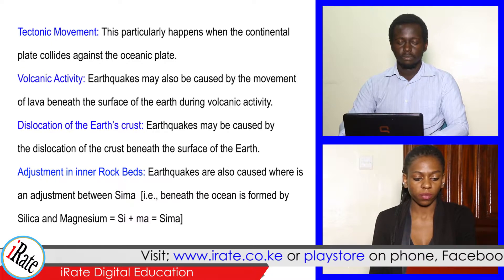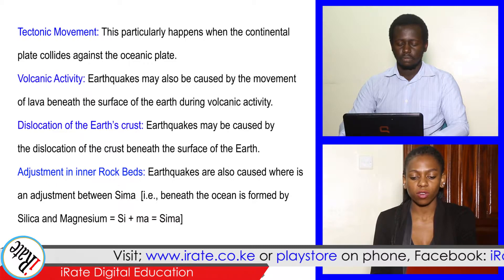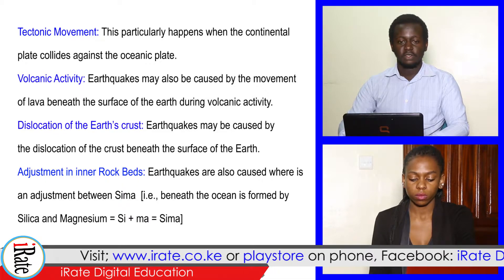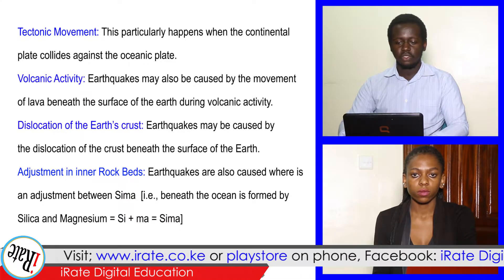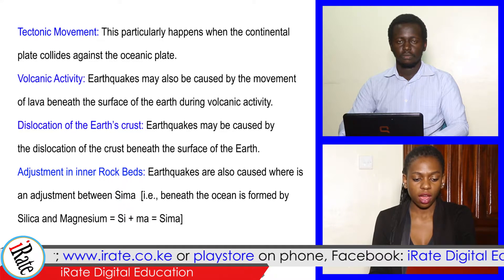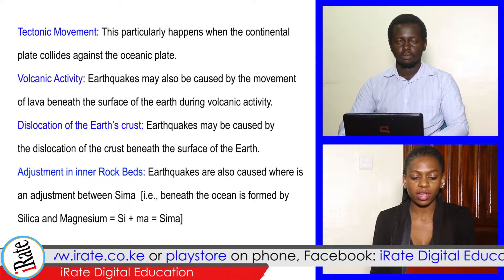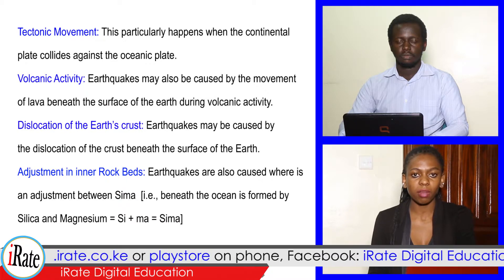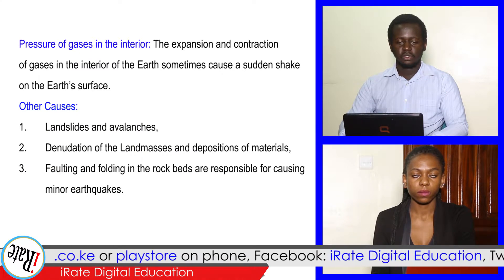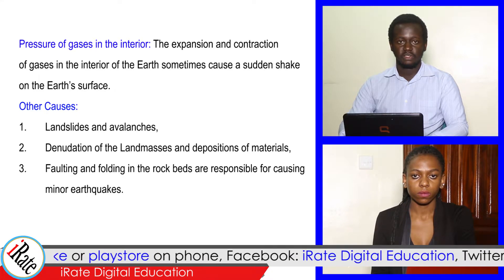2. Volcanic activity. Earthquakes may also be caused by the movement of lava beneath the surface of the Earth during volcanic activity. 3. Dislocation of the Earth's crust. Earthquakes may be caused by the dislocation of the crust beneath the surface of the Earth. Adjustment in inner rock beds — earthquakes are also caused where there is an adjustment between SIMA, that is, beneath the ocean, formed by silica and magnesium. Pressure of gases in the interior: the expansion and contraction of gases in the interior of the Earth can sometimes cause a sudden shake on the Earth's surface.